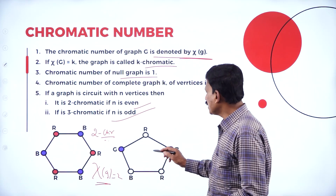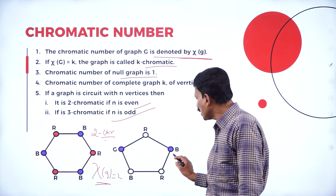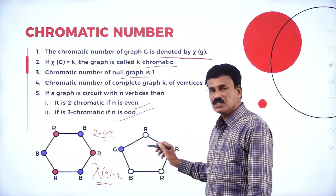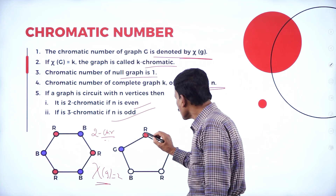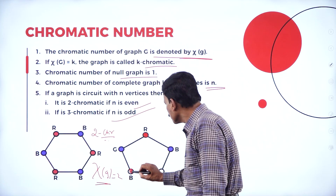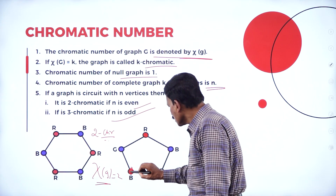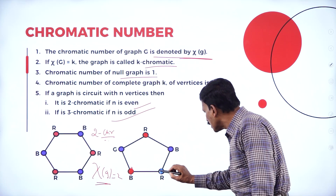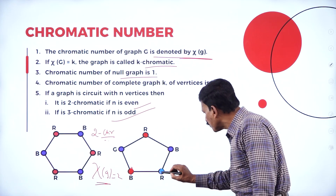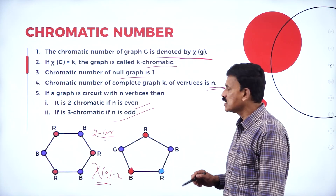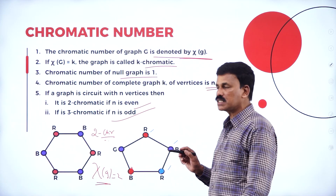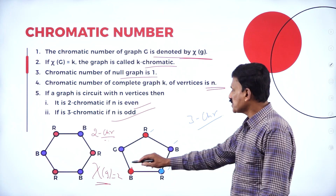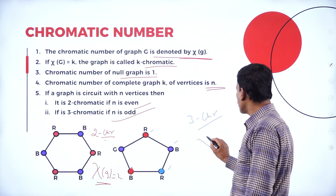In the second example, vertices G and B are not connected so they get the same color. R and B are not connected so they can share a different color. Some vertices R and B are connected so they get different colors. Here B1, B2, B3, B4, and B5 are the vertices. The minimum number of colors used is 3 — therefore this is a three-chromatic graph. So the first is two-chromatic and the second is three-chromatic.